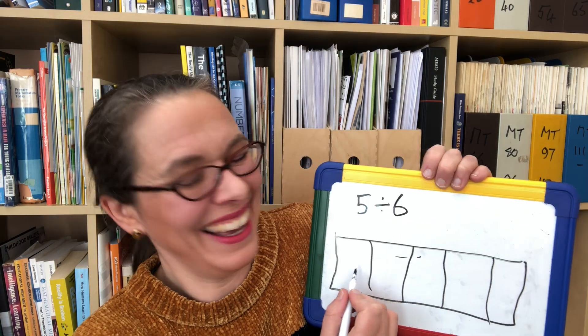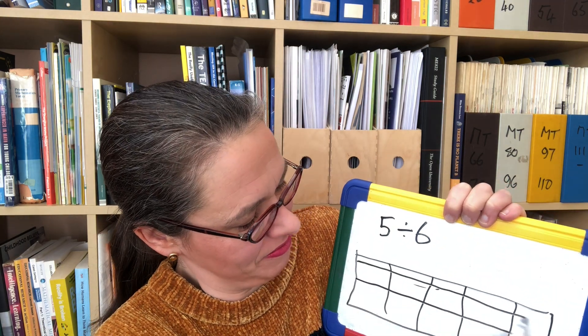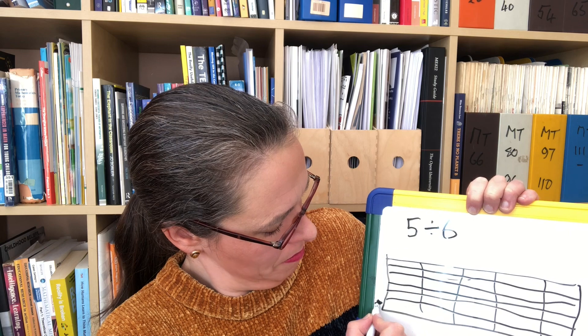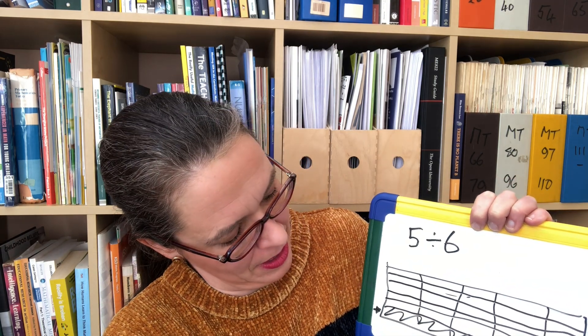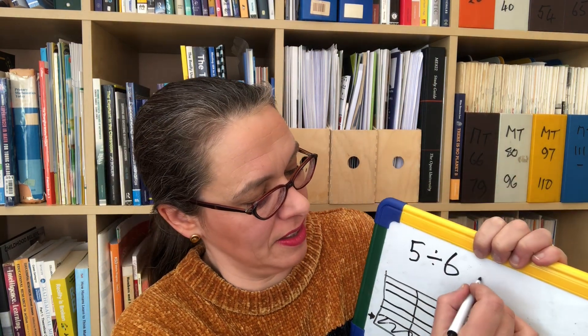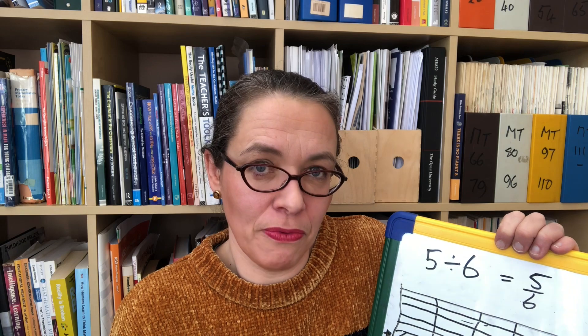The second question we looked at with our pizzas was five divided by six. Let's look at that now with a linear representation. We start with five and it's easiest to share it between six people with horizontal lines. This is one person's share — each of these is one sixth and they've got five sixths, so the answer is five sixths. In algebra, it turns into: if you have a divided by b, it becomes a over b.